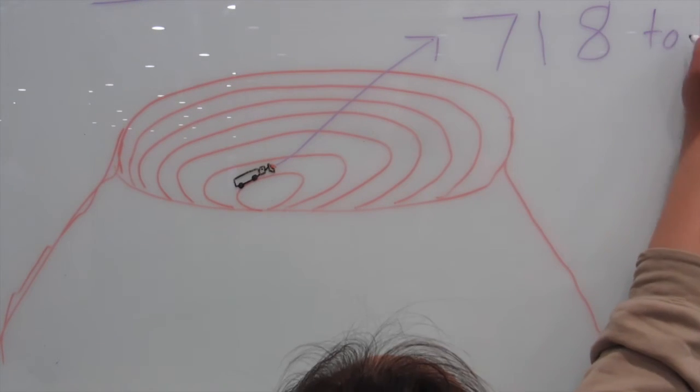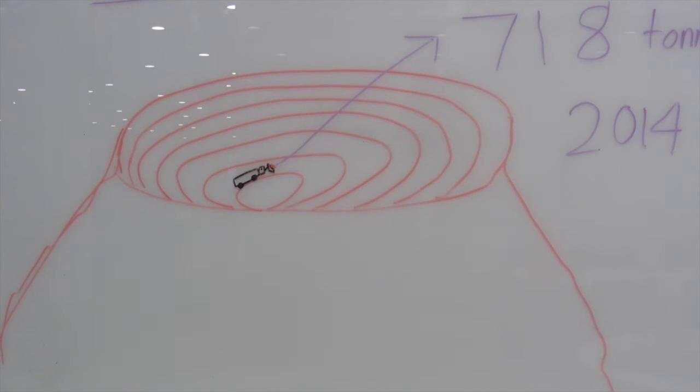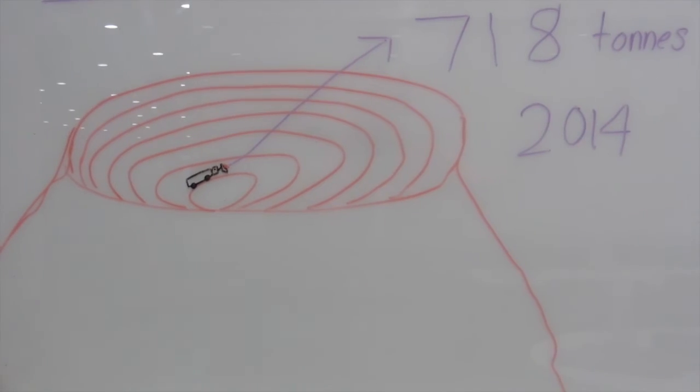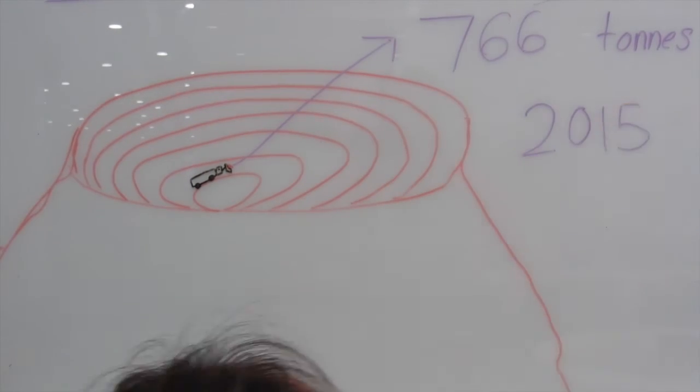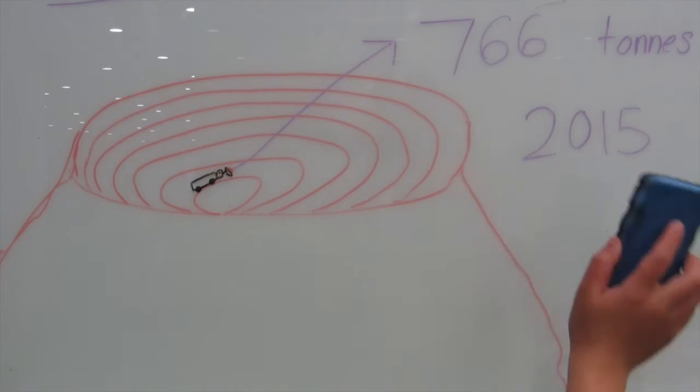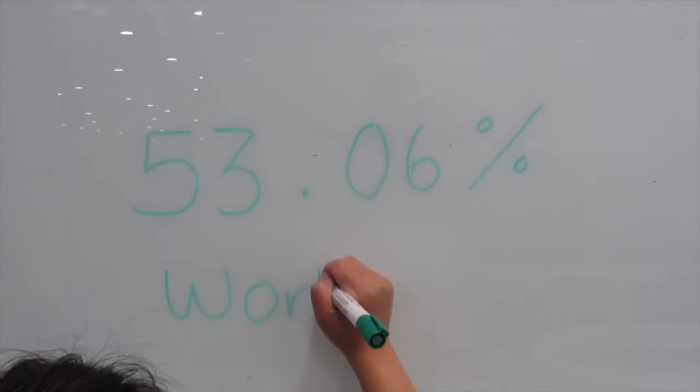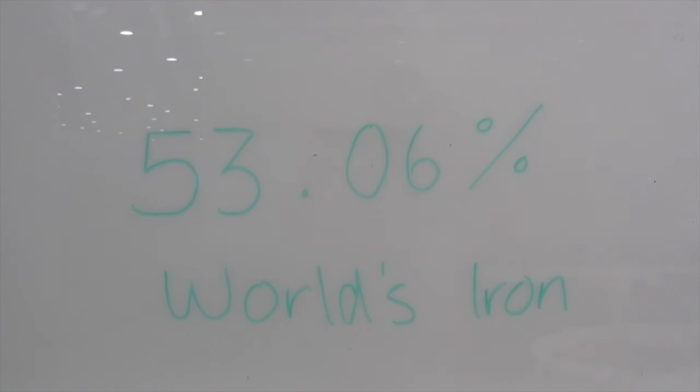In 2014, Australia exported 718 million tons of iron ore. It is forecasted that Australia will export 766 million tons in 2015. This accounts to 53.06% of the world's iron ore.